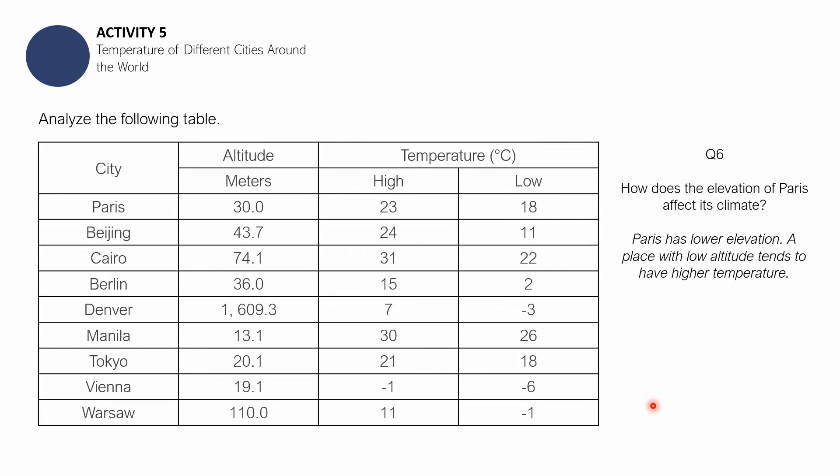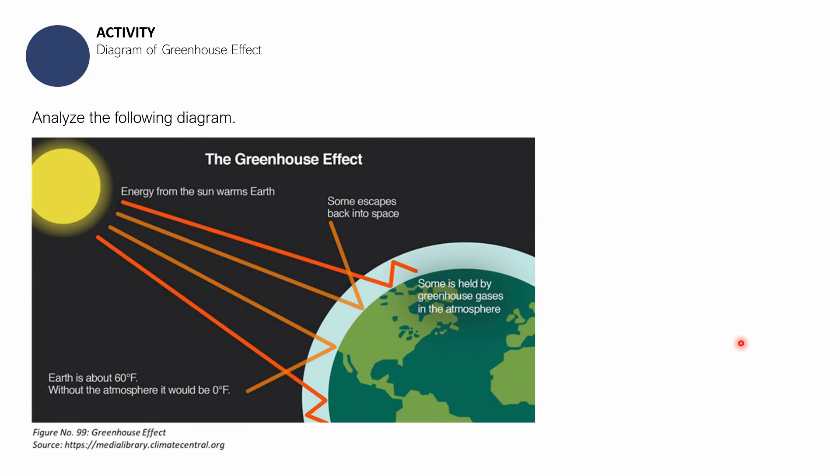Question number 6: Paris has lower elevation. A place with low altitude tends to have higher temperatures. So Paris has 23 degrees Celsius because of its low elevation. That's it for the second part of this session, which is Activity Number 5: Temperature of Different Cities Around the World. I hope we can visit those places so we can see it for ourselves.